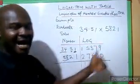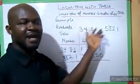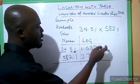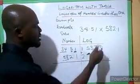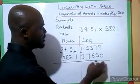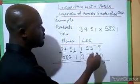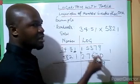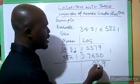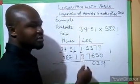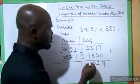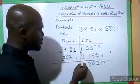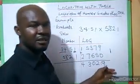Draw a line. Because the operation is multiplication, you add the logarithms. If it were division, you would subtract — that's basic logarithm. Adding 1.5379 plus 2.7650: 9 plus 0 is 0, carry nothing; 7 plus 5 is 12, put 2 carry 1; 3 plus 6 plus 1 is 10, put 0 carry 1; 5 plus 7 plus 1 is 13, put 3 carry 1; then 1 plus 2 plus 1 is 4. The result is 4.3029.